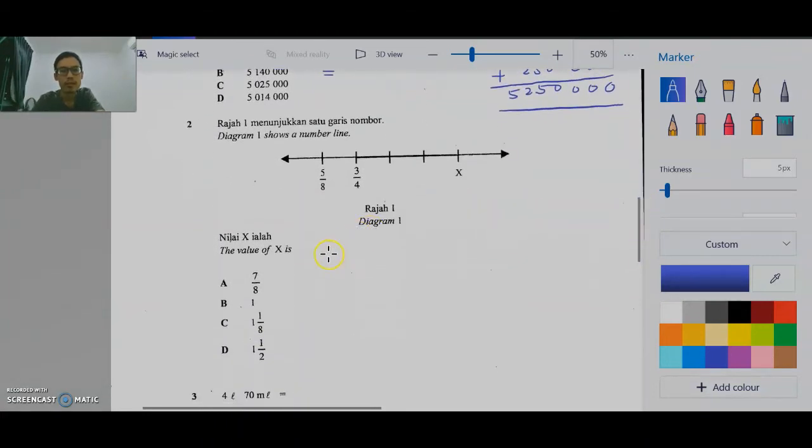Question 2. This is the number line. Find the value of X. First you find out the difference between these two. Cari perbezaan kedua-dua ini sebab dia bersebelahan. So pastikan nombor bawah dia sama dulu. Make sure the denominator are the same. Ini kali 2 untuk jadikan 8, ini kali 2. So, 3 darab 2, 6. 4 kali 2, 8. So, ini ialah 6 per 8. So, jelas nampak ini 5 per 8. Yang ni 6 per 8, di sebelah 7 per 8, 8 per 8, 9 per 8.